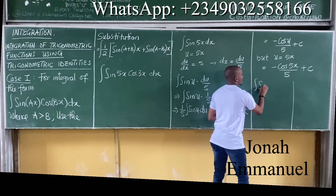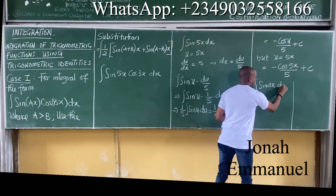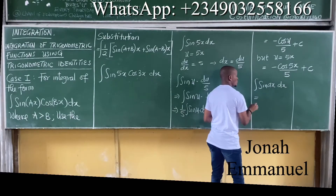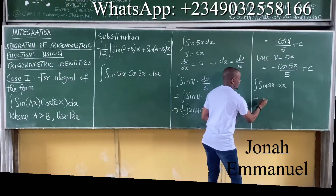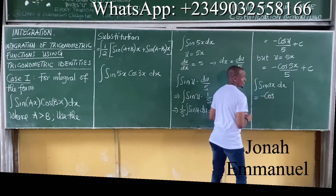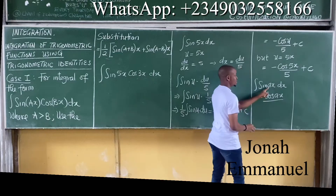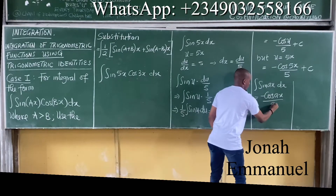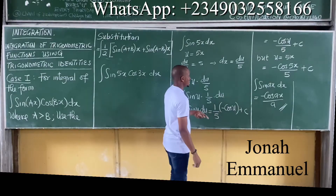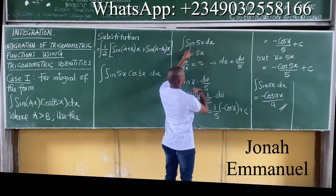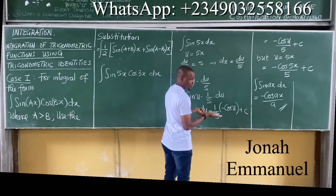Notice this important shortcut: if I'm integrating sin of any number times x, dx, my answer will be: integrating sine gives minus cosine, repeat the same argument ax, all over the number a. So the integral of sin(ax)dx equals minus cos(ax) over a plus C. This will always be your answer.